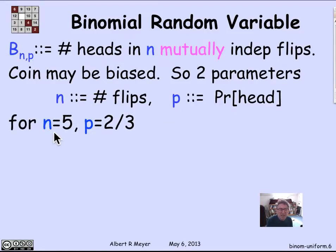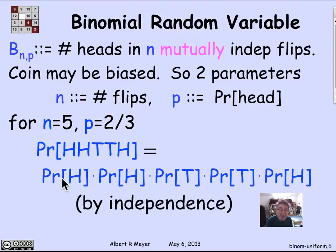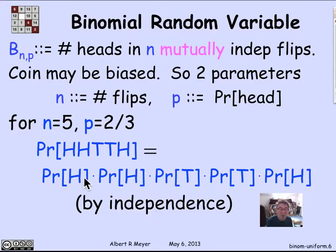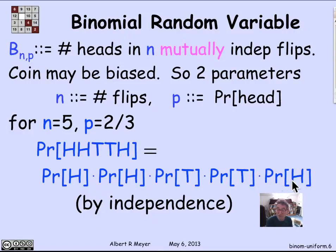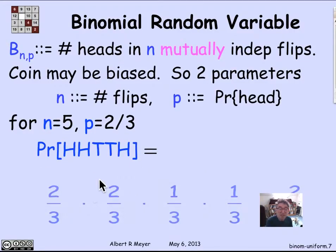So for example, if n is 5 and p is 2/3, what's the probability that we consecutively flip head, head, tail, tail, head? Well, because they're independent, the probability of this is simply the product of the probability that I flip a head on the first toss, which is probability of h, which is p, probability of h on the second toss, probability of t on the third, t on the fourth, h on the fifth.